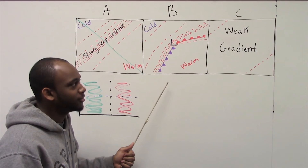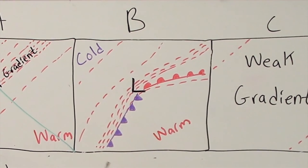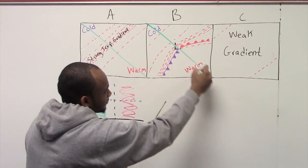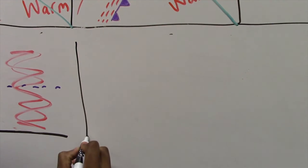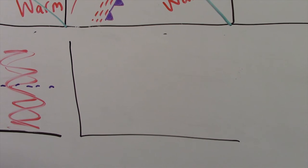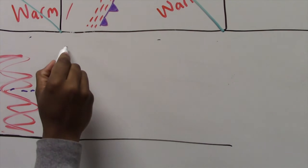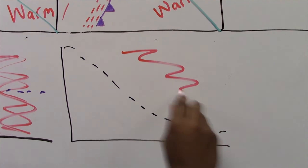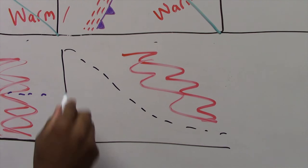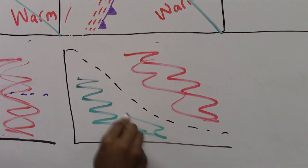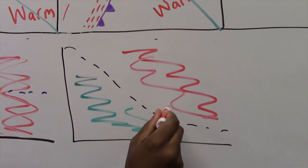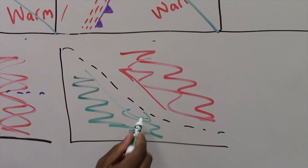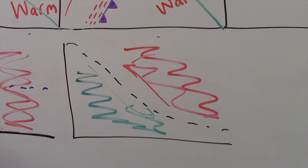Here we have a mid-latitude cyclone that has formed over an area of strong baroclinicity. We are going to take a cross section through this cyclone. We have our zone of dividing, with warm air on one side and cold air on the other. The warm air is traveling up this way and the cold air going around this way. All that potential energy has been converted into kinetic energy.